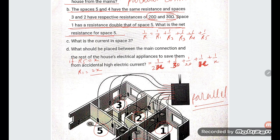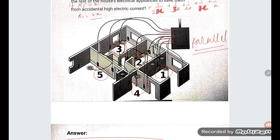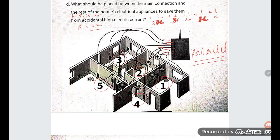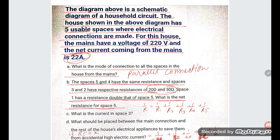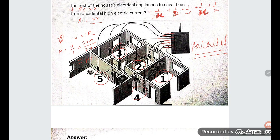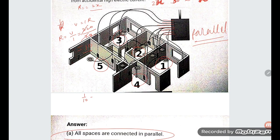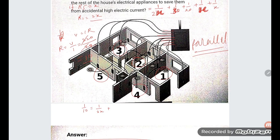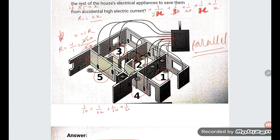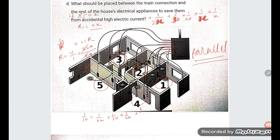They are asking for the value of x, which is the net resistance of space 5. Using V = IR, the total resistance R = V/I = 220/20 = 10 ohms. So 1/10 = 1/2x + 1/30 + 1/20 + 1/x + 1/x.